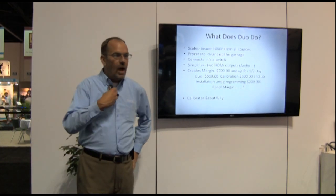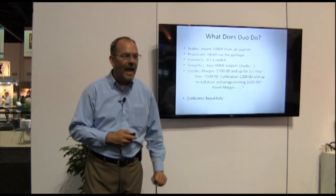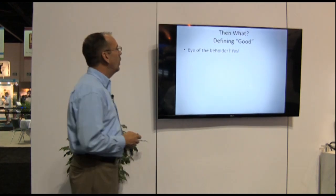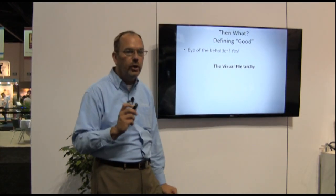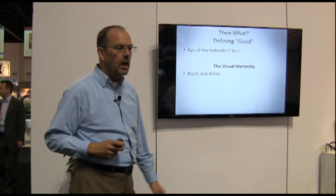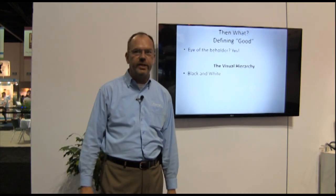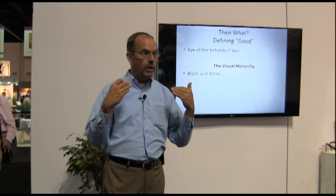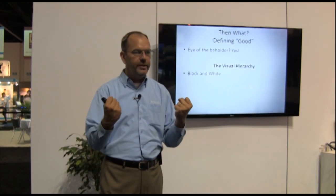The best part of our world — the calibration side — is that the Duo calibrates beautifully. So what makes a good picture? The picture is in the eye of the beholder because it's all about the human eye and how it sees. Let's look at the visual hierarchy. The first thing we look for is good black and good white signal — that's where the contrast ratio comes from, that black-to-white transition.